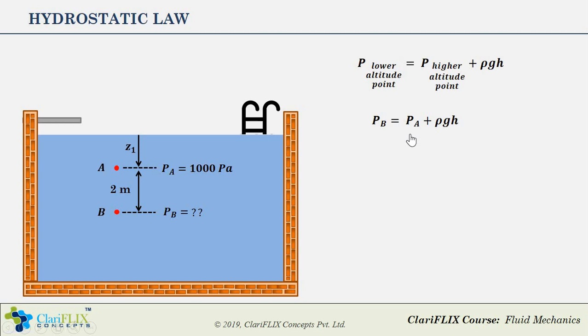In this equation, pressure at point A is known to us, which is 1000 Pascal. ρ is density of the fluid filled between these two points, which in this case is water, and therefore ρ for water equals 1000 kg per meter cube. g is gravitational acceleration whose value is 9.81 meter per second square. And h is the vertical distance between point A and B, which is 2 meters. So therefore PB equals 1000 plus 1000 times 9.81 times 2, and finally PB equals 20620 Pascal.